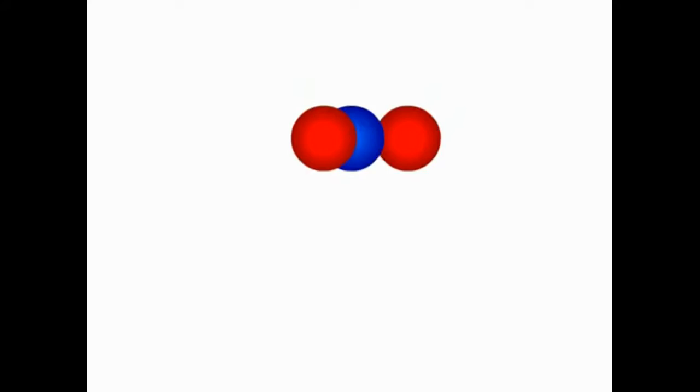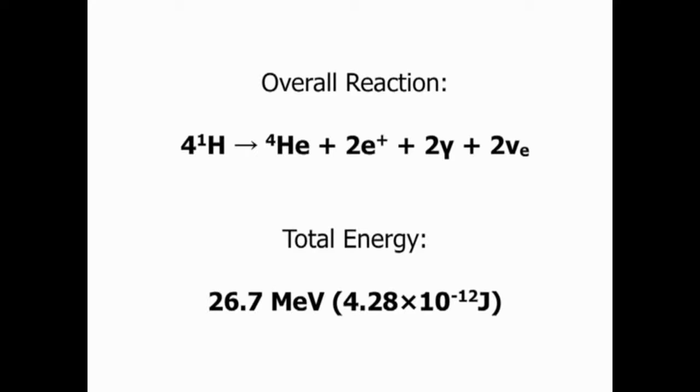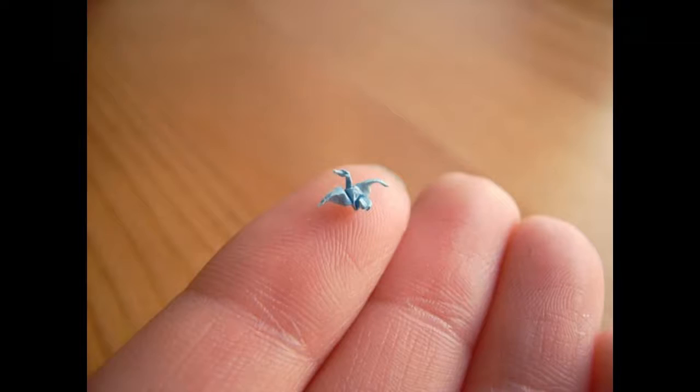Now for example, in my solar system video, I describe the proton-proton chain, or the PP chain, as having an energy output of 26.7 mega electron volts. If I used joules instead for the system, the number would be tremendously small, and this complicates the math, data crunching, computerized simulations, plain comparison, and even general understanding for that matter.